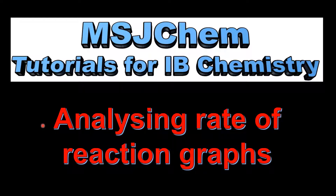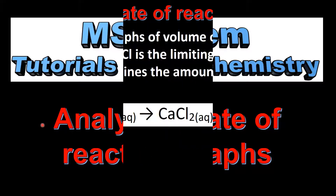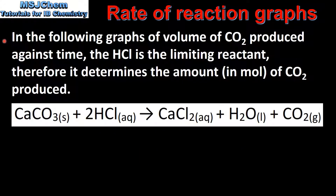This is MSJChem. In this video I will be analysing rate of reaction graphs. In the following graphs of volume of carbon dioxide produced against time, the hydrochloric acid is the limiting reactant, therefore it determines the amount in moles of carbon dioxide produced.